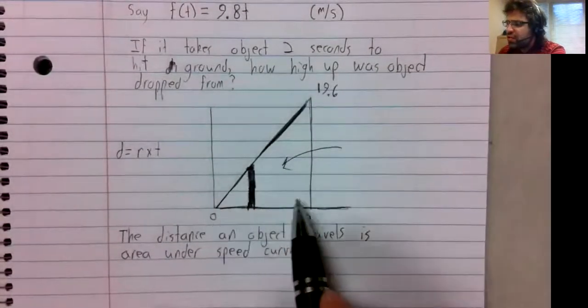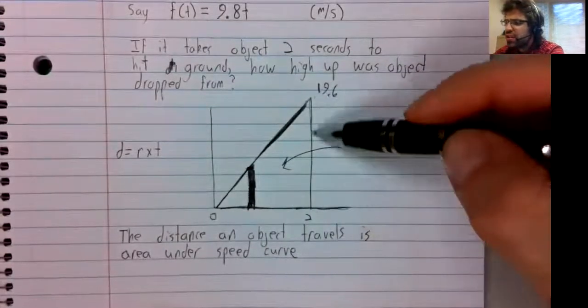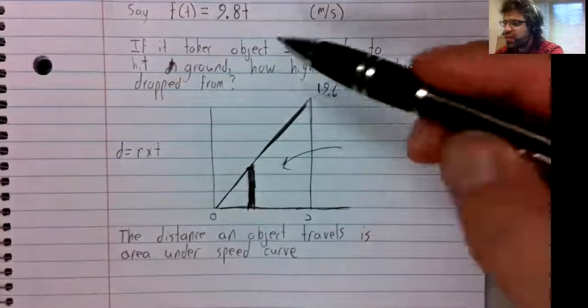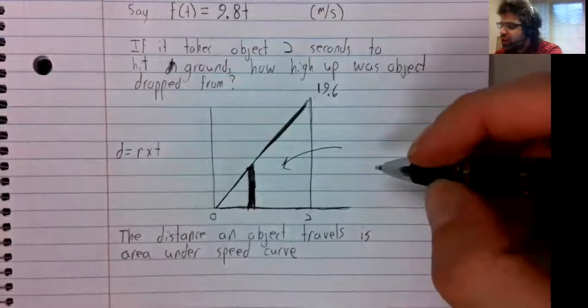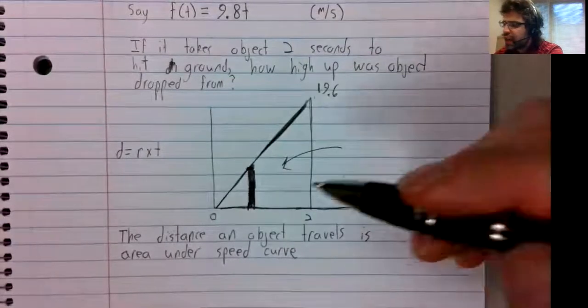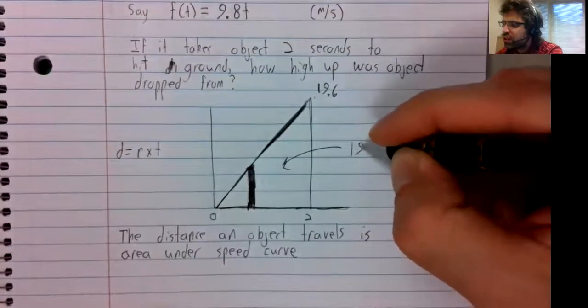The base is two. The height is 19.6. Stick two in here, we get that. So the area is one half two times 19.6, and the object was 19.6 meters above the ground.